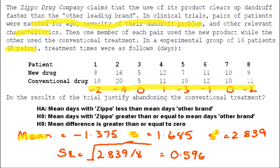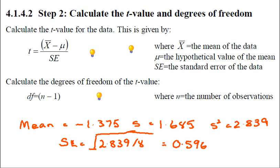We can then work out the standard error using the same formula as in exercises 1 and 2. It's the square root of the variance divided by the number of observations. So square root of 2.389 divided by 8 equals 0.596. Those two numbers, the mean and the variance, are the ones we need for proceeding with the test.